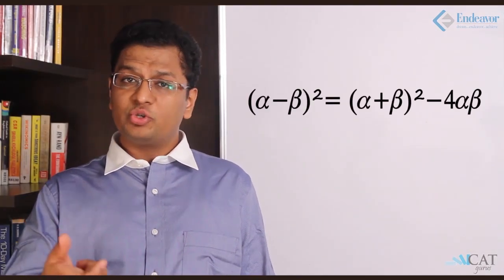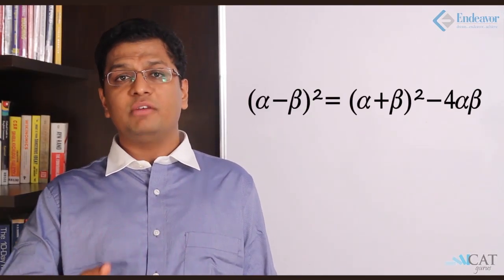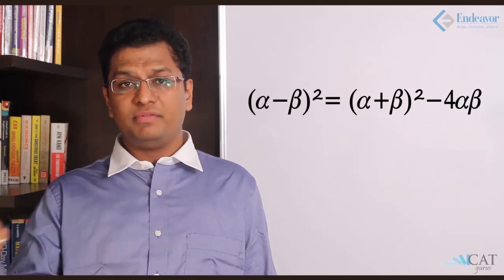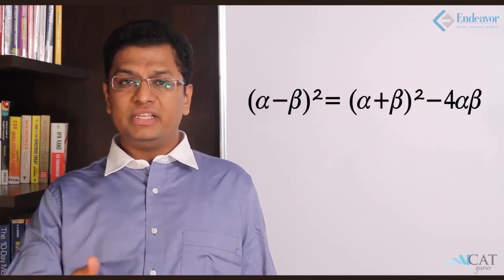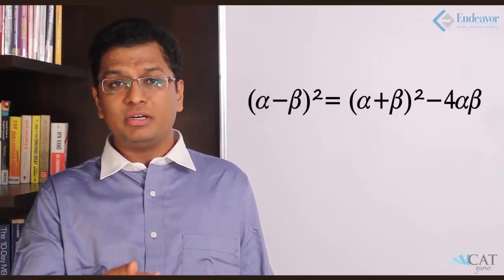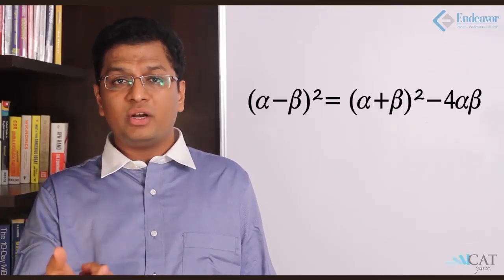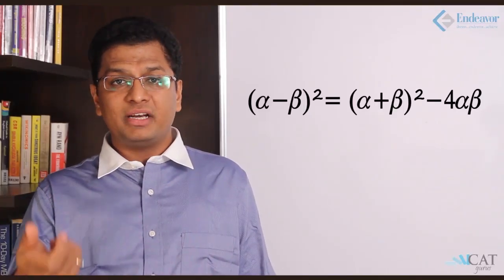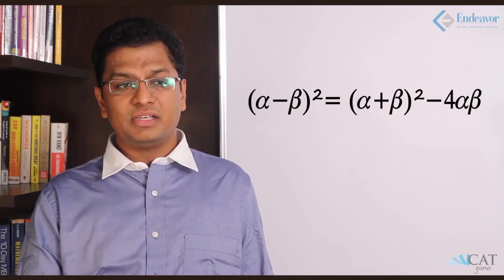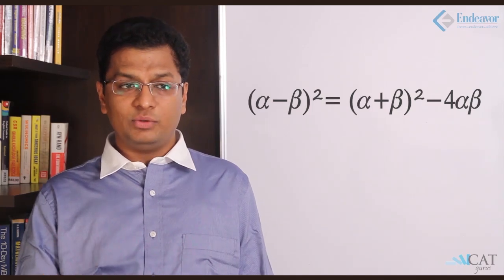Let us look at the difference of the roots. (alpha - beta)² = (alpha + beta)² - 4·alpha·beta, which gives us that (alpha - beta)² is the square of the sum of the roots minus 4 times the product of the roots. So this gives us the difference of the roots.